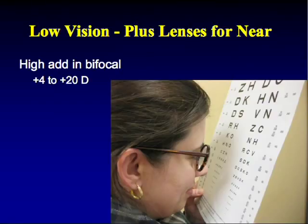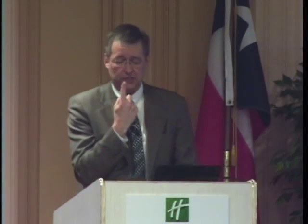High plus adds from plus 4 to plus 20 diopters can be used in bifocal form. The advantage is both hands remain free and there's a wide field of view. The disadvantage is the very short working distance. At 5 centimeters, binocular patients must converge intensely and will effectively be exotropic at near, requiring base-in prisms to maintain fusion.